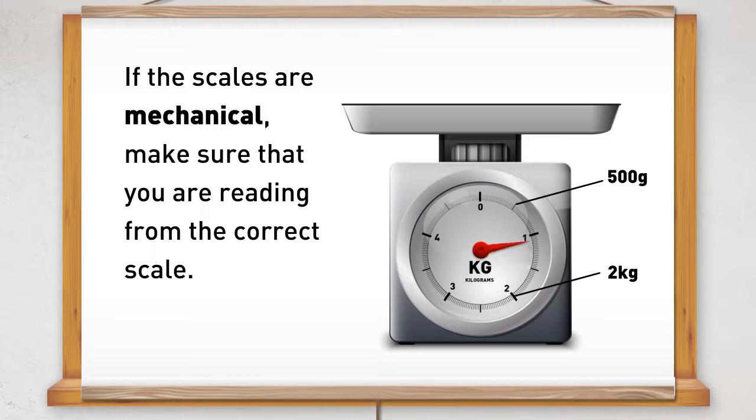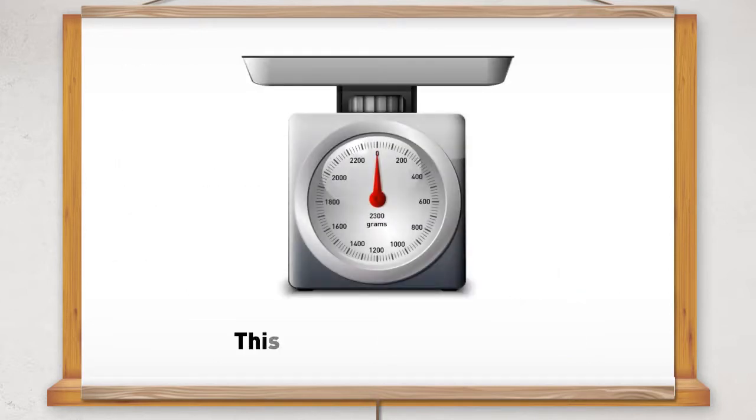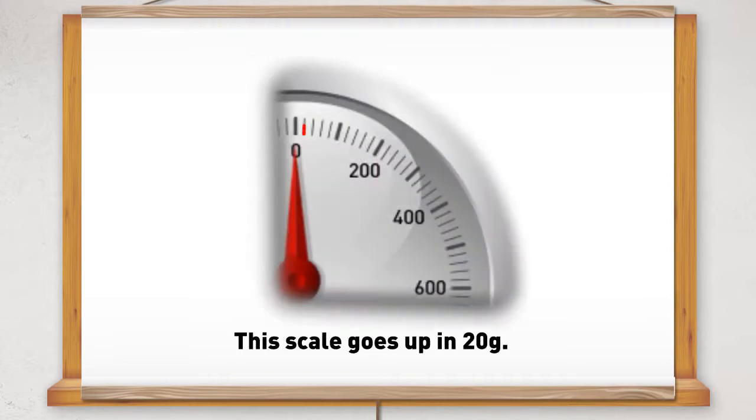Make sure that you look to see what division the scale goes up in. For example, this scale goes up in 20 grams. Here are the grams: 20 grams, 40 grams, 60 grams, and here is 100 grams.